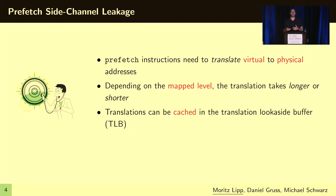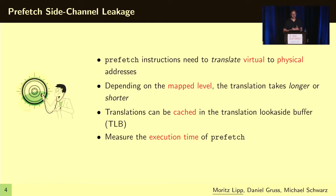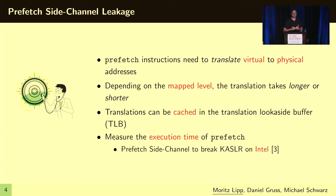In addition, for subsequent accesses, a CPU has a translation look-aside buffer (TLB) that can cache those translations, so it does not have to do this translation every time. And if you now measure the execution time of such an instruction, you have side-channel information that we described some years ago to break KASLR on Intel CPUs.